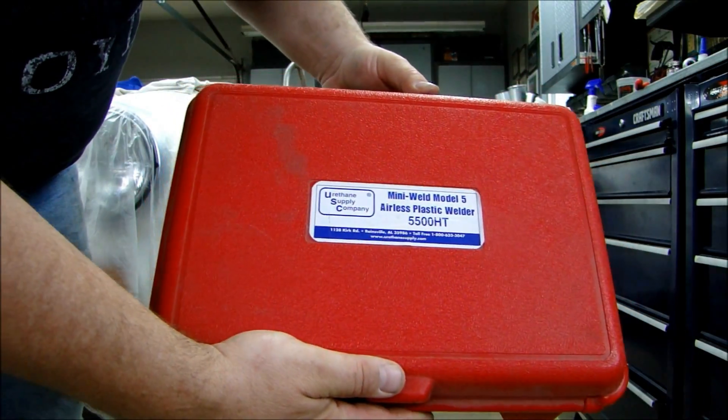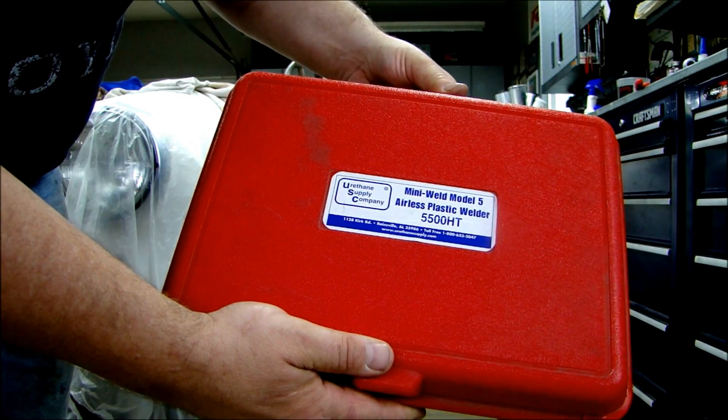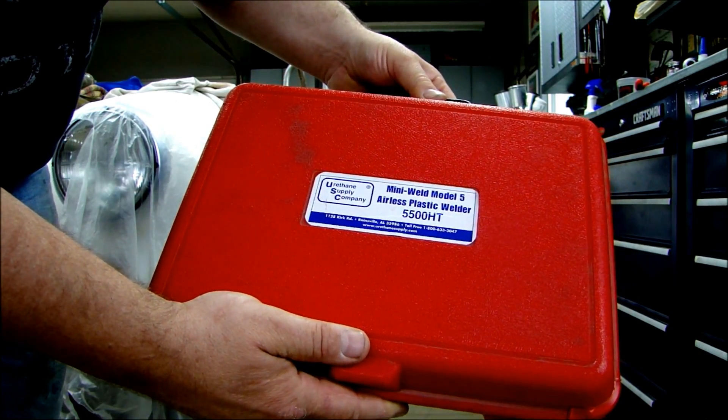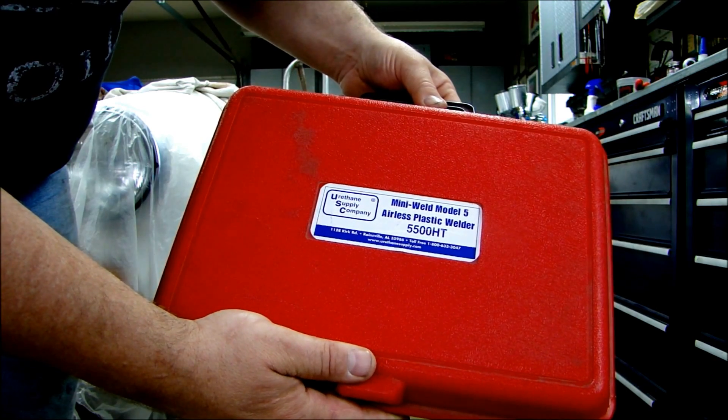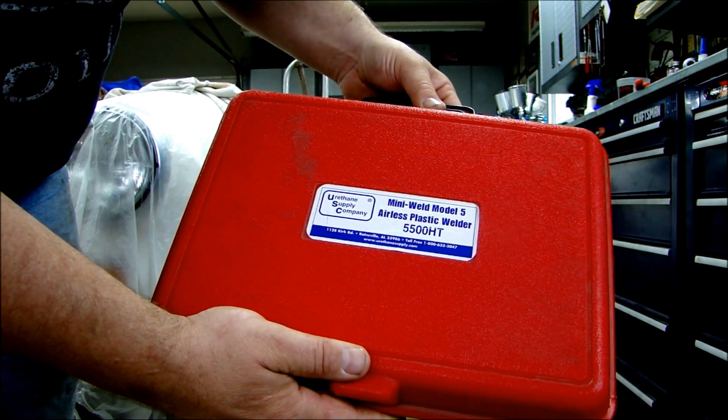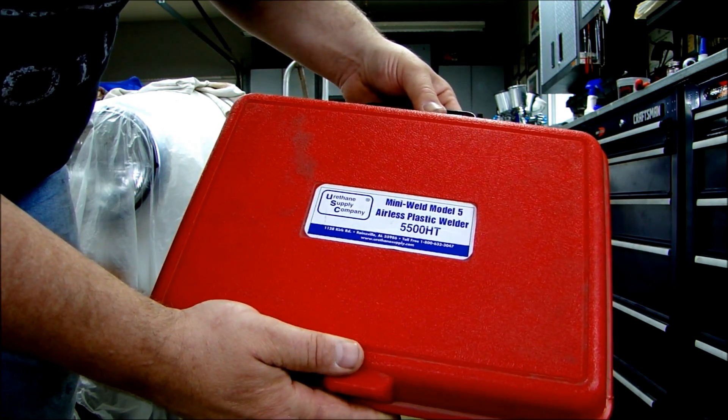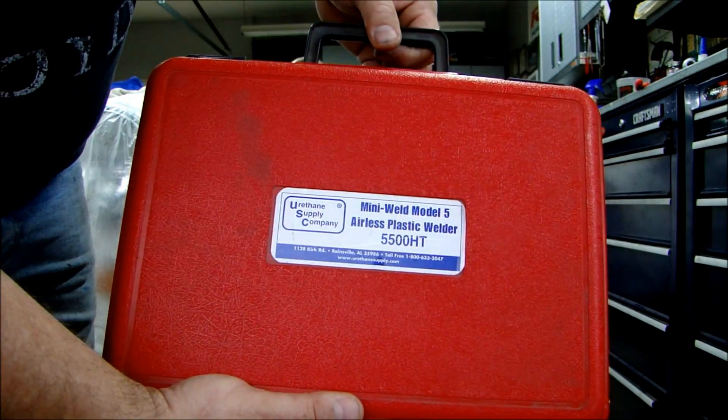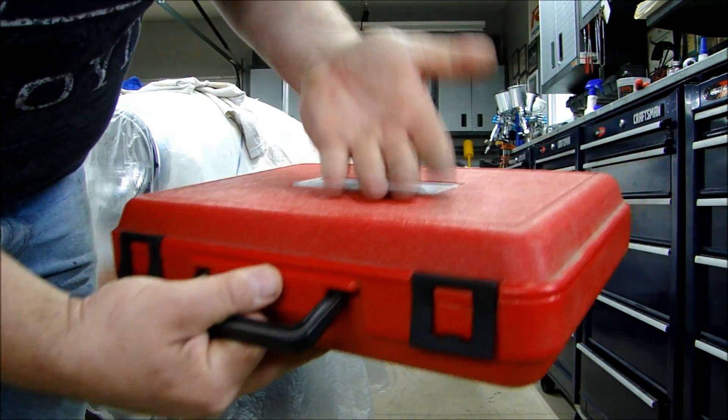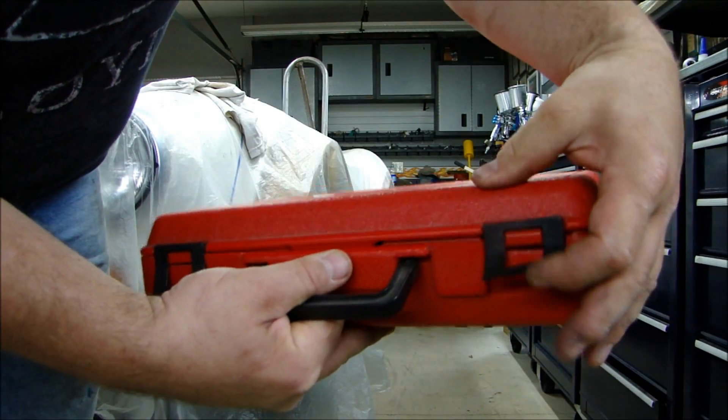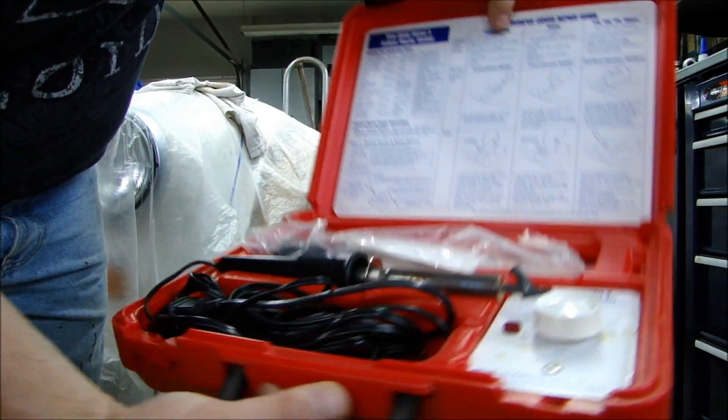This is the kit I use. You can find this online at Amazon. It's made by the Urethane Supply Company and it's very simply a Mini Weld Model 5. It's an airless plastic welder, model 5500 HT. Obviously it's a polypropylene case, got these hinges built in. And what you get, this is what you get in the kit.